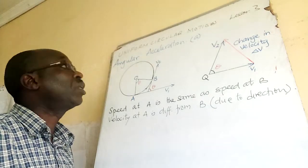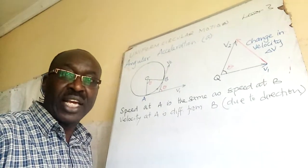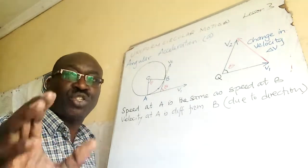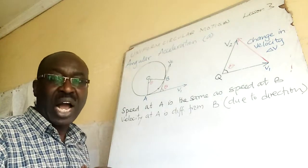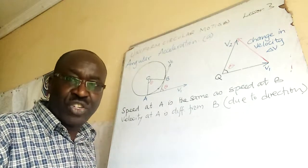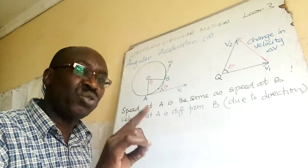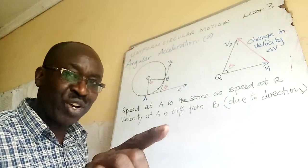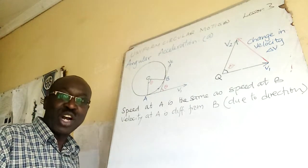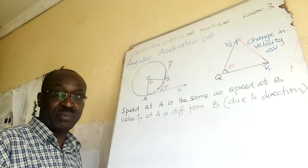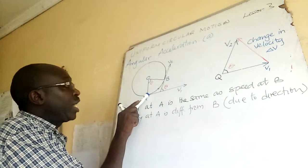Welcome to lesson three on uniform circular motion. Today I'm going to show you how we can get angular acceleration. Angular acceleration is the rate of change of angular velocity, just as acceleration is the rate of change of velocity. But I want us to go deeper instead of memorizing — your knowledge of vectors will be very important.